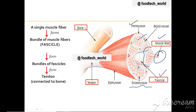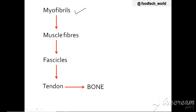When bundles of fascicles are arranged they form tendon, and this tendon is connected to the bone. So to summarize: myofibrils form muscle fibers, muscle fibers form fascicles, fascicles form tendon, and tendon connects to the bone. This is the basic structure of skeletal muscle tissue.